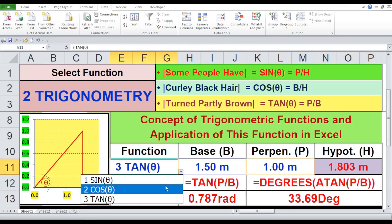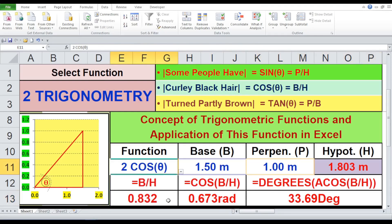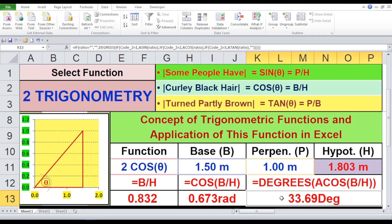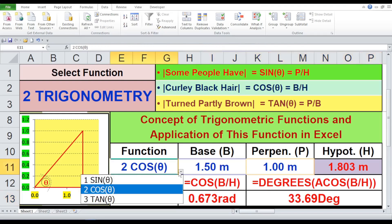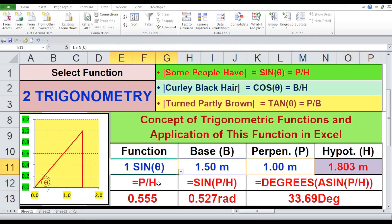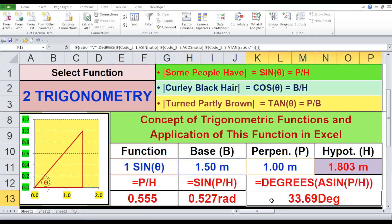Trial 2B, function cos. B by H equals 0.832. Cos B by H equals 0.673 radians. Base angle theta equals 33.69 degrees. Trial 2C, function sin. P by H equals 0.555. Sine P by H equals 0.527 radians. Base angle theta equals 33.69 degrees. Since the base angle theta is the same, it proves our calculation is perfectly alright.